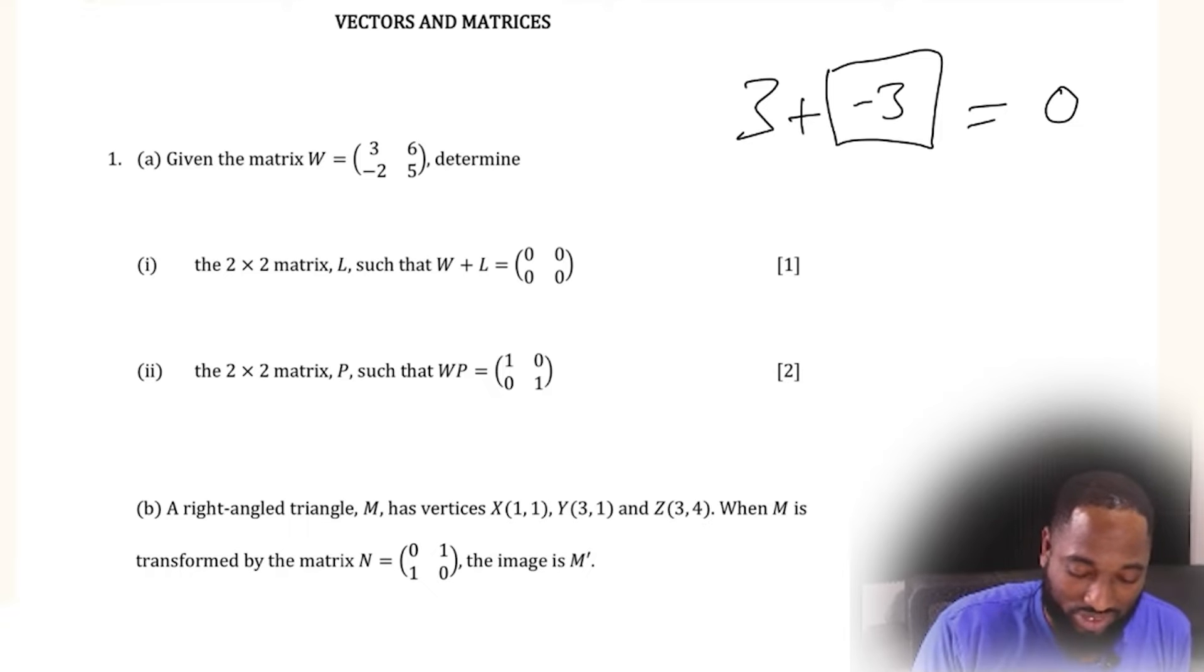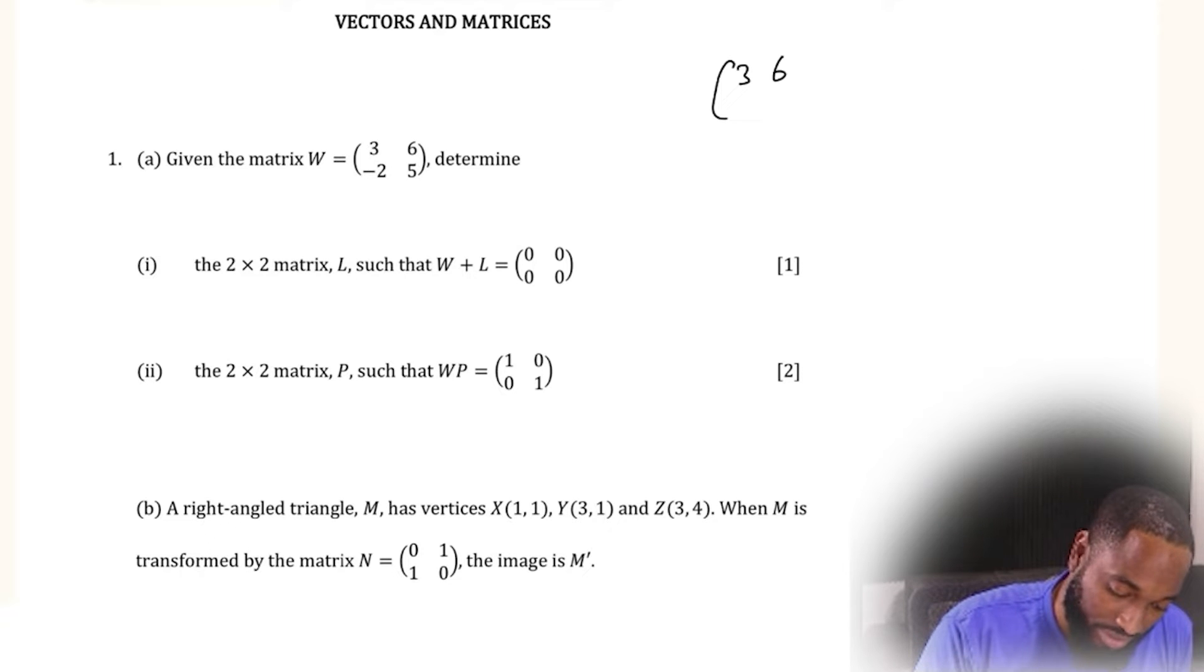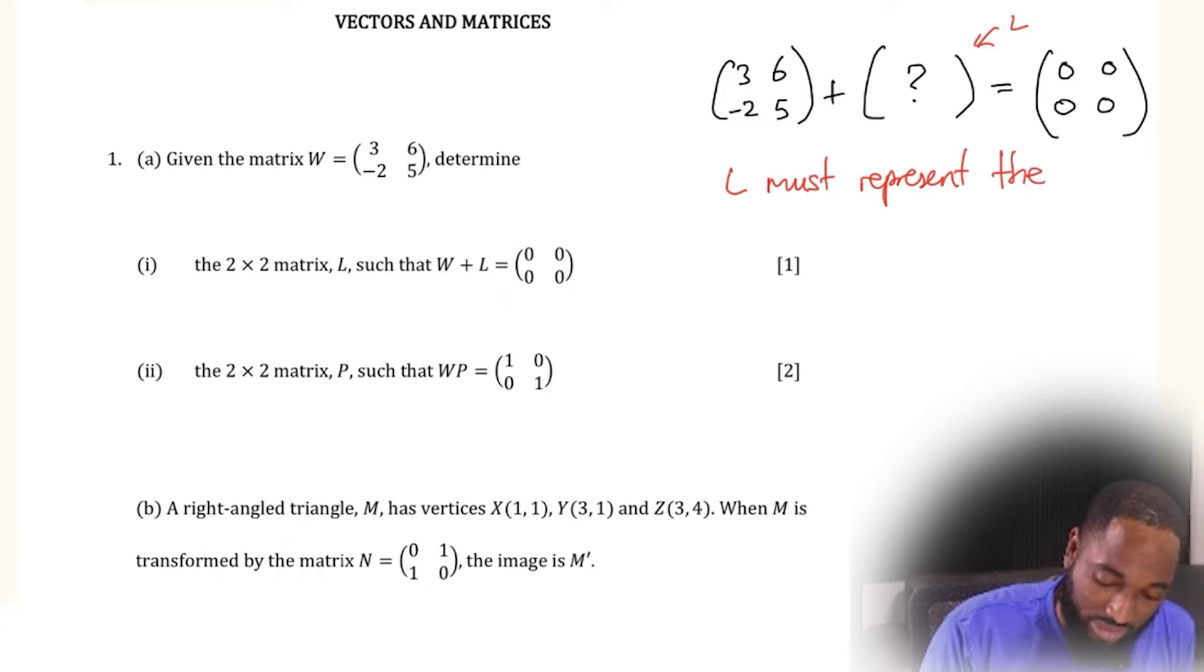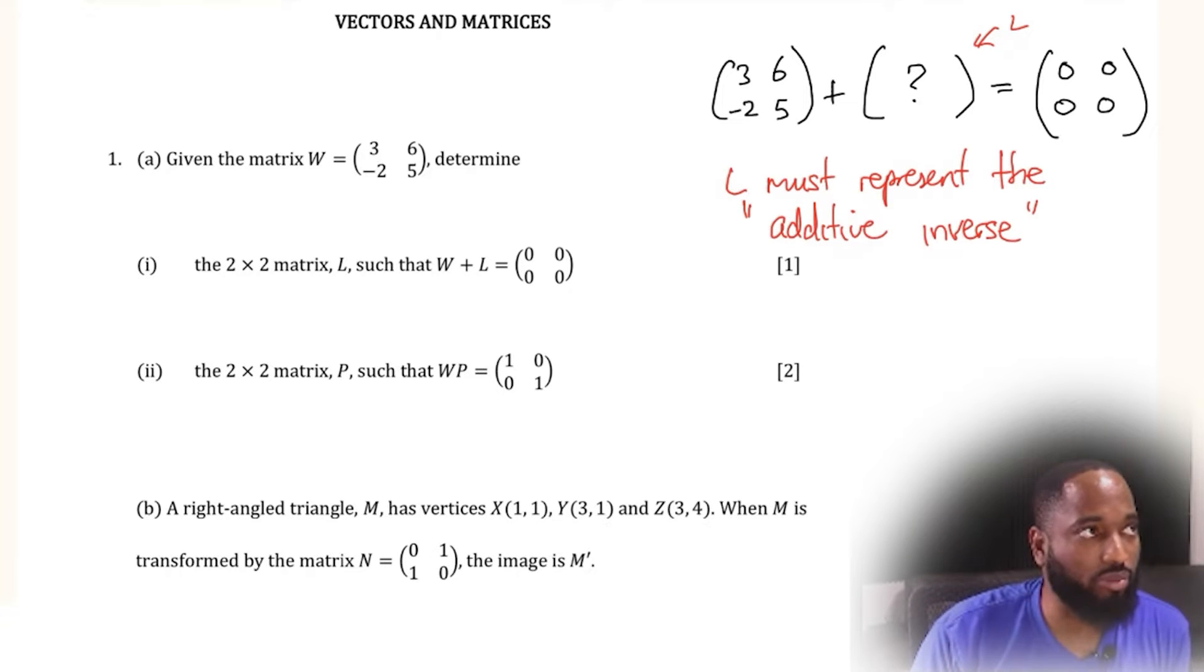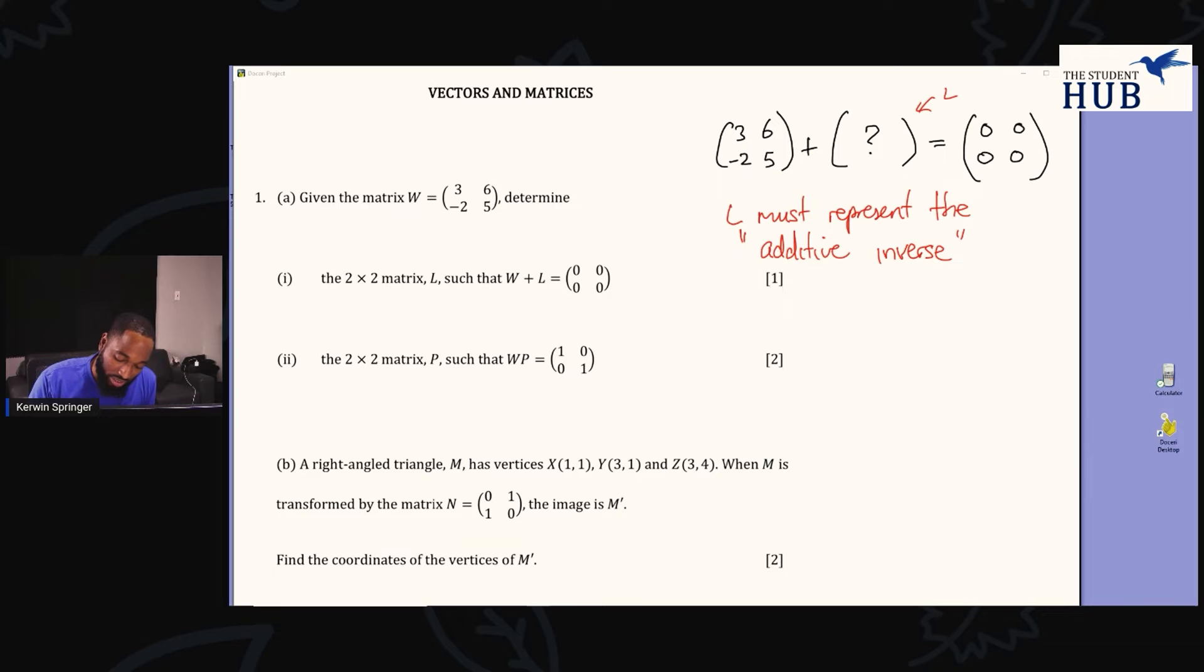It's the same thing they're basically asking you here. We have the matrix W—three, six, negative two, five—and we're adding some kind of mystery guy here that will send everything to zero. This matrix is called L, so L must represent the additive inverse. We want to change all these signs and these numbers, so L must be negative three, negative six, two, and negative five.